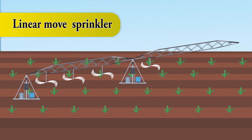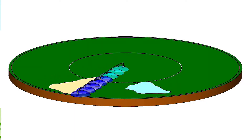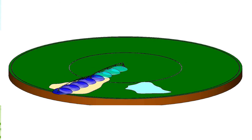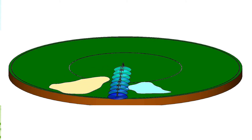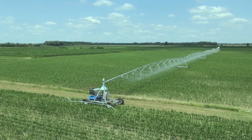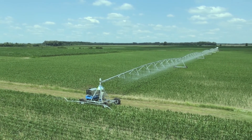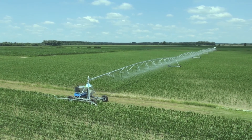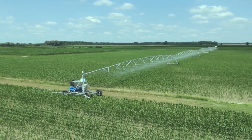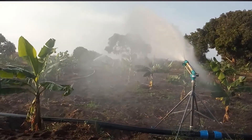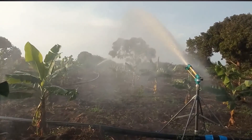Types of sprinklers include: center pivot, towable pivot, rain gun, impact sprinkler, pop-up sprinkler, and linear move sprinkler. Center pivot consists of a single sprinkler lateral supported by a series of towers, anchored at one end, and rotating around a fixed central point called the pivot point. Towable pivot is similar to center pivot but the pivot is towed by a tractor; three to four wheels in the center make it possible to move from one place to another.